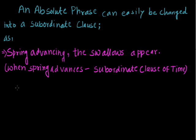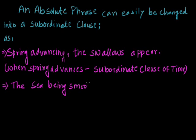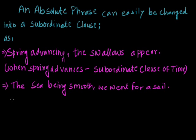Another example: 'the sea being smooth, we went for a sail'. Here 'the sea being smooth' is an absolute phrase, and this can easily be changed into the subordinate clause 'because the sea was smooth'.